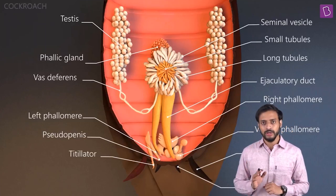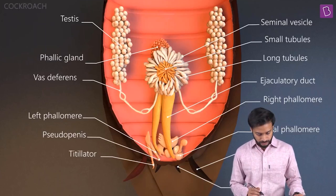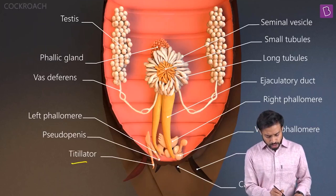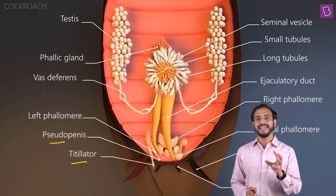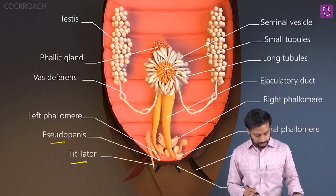Take a proper look at the overall structures because these pictures will help you remember the functions and structures. The titillator and pseudo penis are involved in the reproduction process, but detailed knowledge of those is not required right now. The other structures we have discussed extensively are what's important.